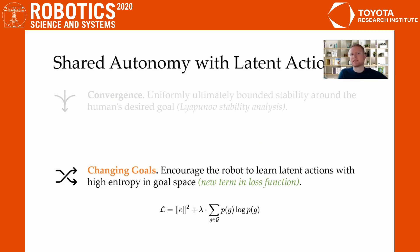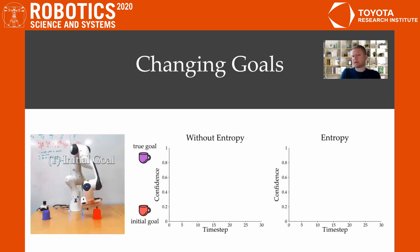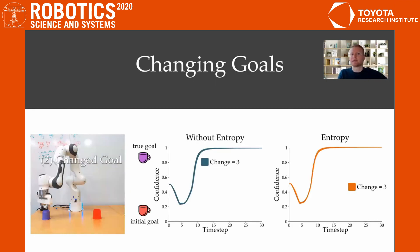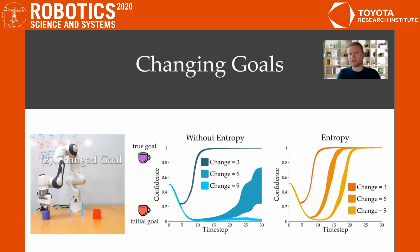We address this problem by encouraging entropy in the latent action space. A bolso-irrational simulated human is controlling the robot. They initially move towards the red cup and then change their mind so that the purple cup becomes their true goal. On the left, we show a simulated human interacting with a latent space that does not encourage entropy. If the simulated human changes their mind early in the task, they can reach their true goal. But if the human changes their mind after the robot becomes confident that they want to reach the red cup, they get stuck, and this only gets worse the longer they wait before changing their mind. Encouraging entropy addresses this problem. On the right, the simulated human is always able to use latent actions to change goals, even if the robot is convinced in their initial goal.